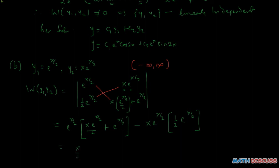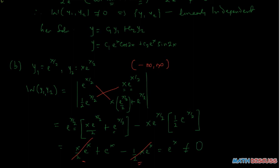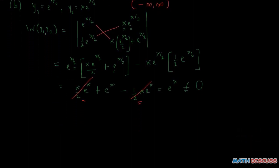When we expand, using the laws of indices, we have x over 2 times e to the power x, plus e to the power x — from this term times this term. Then minus one-half x·e to the power x. We observe that the x over 2 e to the power x terms are the same and cancel each other out. We are left with e to the power x, which we know is never equal to 0 on the set of real numbers. So we have shown that the Wronskian of y1 and y2 does not equal 0, which implies y1 and y2 are linearly independent.